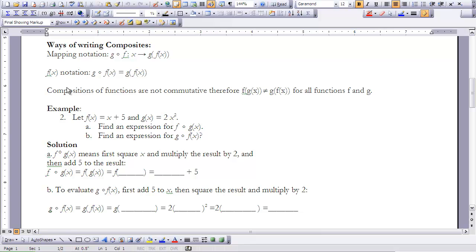Composite of functions are not commutative. Therefore, f of g of x is not equal to g of f of x for all functions f and g. And you will see that we found that in our discussion of the rebates and discounts. The one was always less than the other one. So let's take a look at example two. We're going to let f of x equal x plus 5, and g of x equal 2x squared.